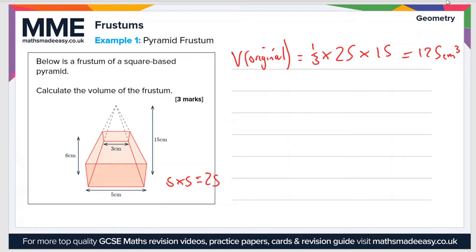Next we need the volume of the pyramid that's been removed. We don't have the height of it, but we do have the base, so let's first work out the height. The height of the original pyramid is 15 centimeters and the height of the frustum is 6 centimeters, so the difference must be the height of the small pyramid, which is 9 centimeters.